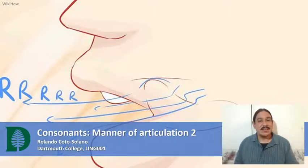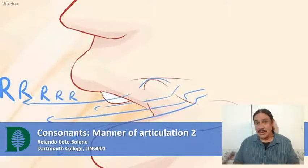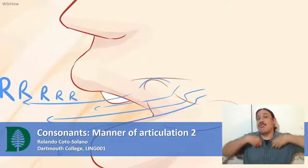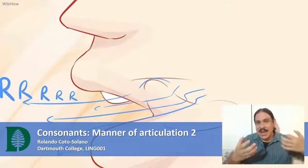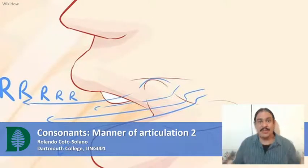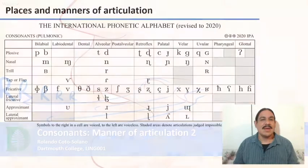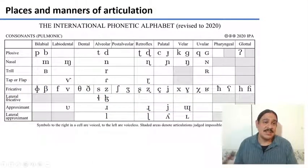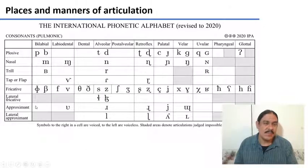A second way is the manner of articulation. This is the way in which the air rushes out of your mouth, and we began to see some manners of articulation which are represented in the rows of the IPA.